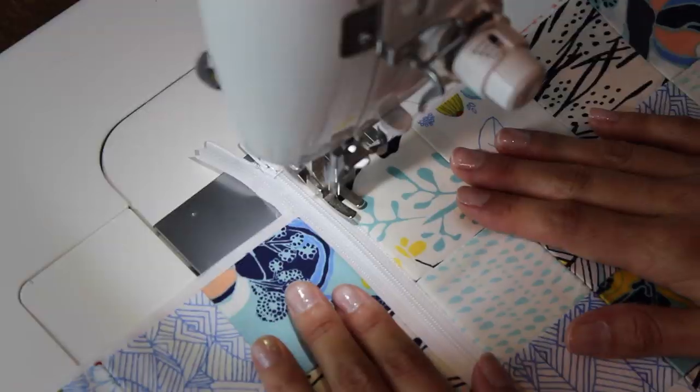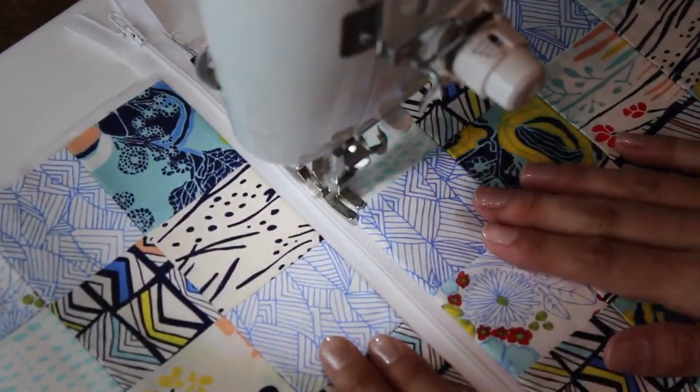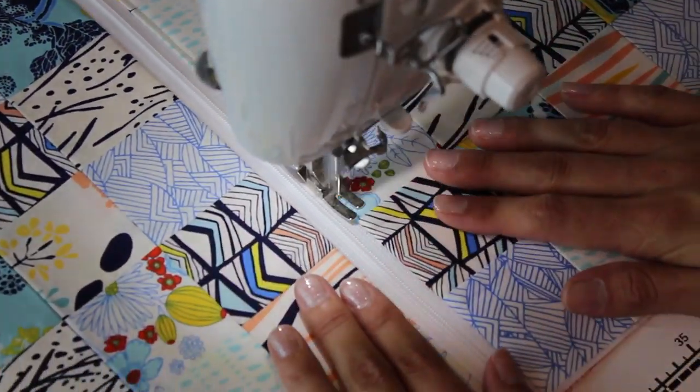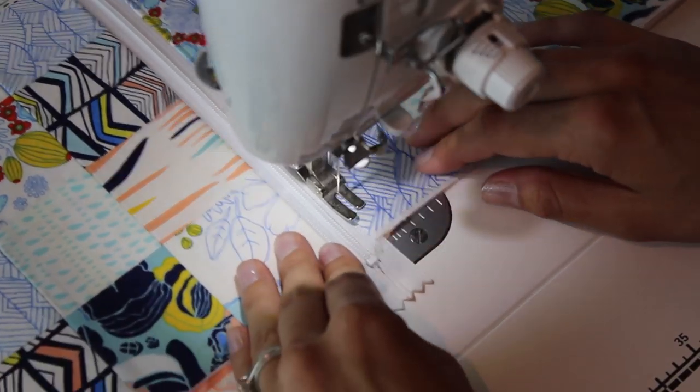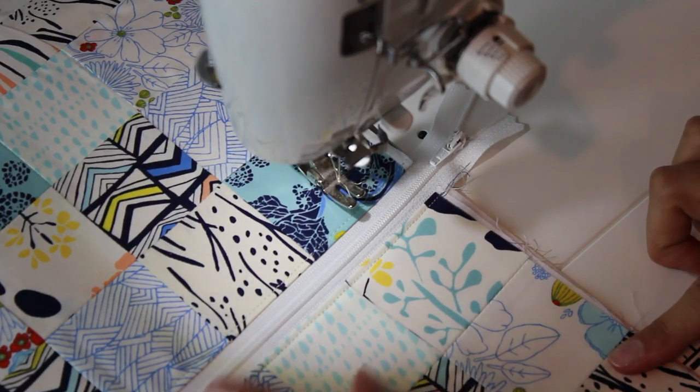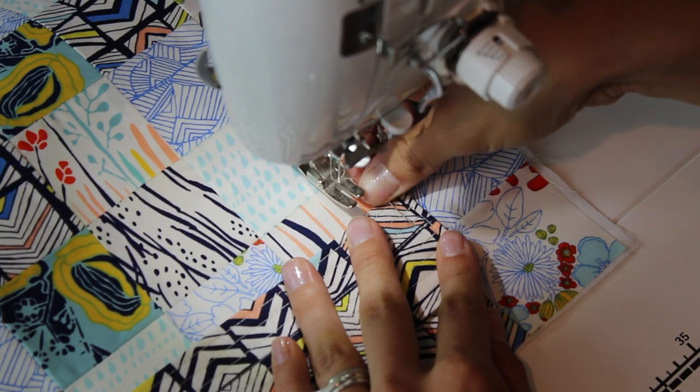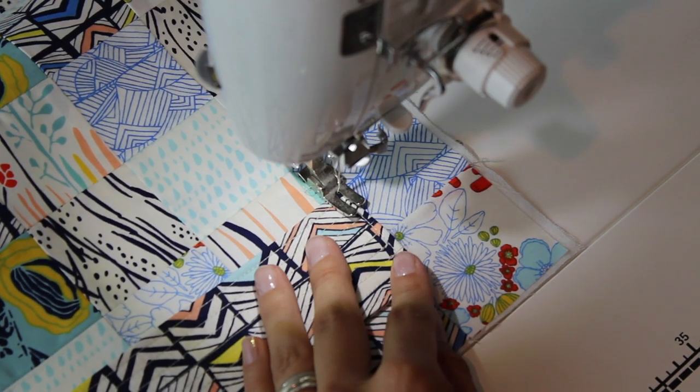Head on over to the machine, and we are going to topstitch our zipper. That always gives it a nice finished look. So topstitch about an eighth of an inch down, sixteenth of an inch maybe, on both sides. And then we're going to attach our little strap here.